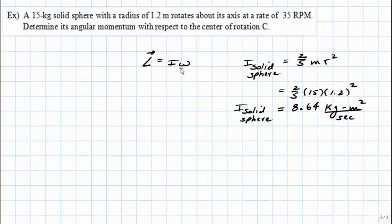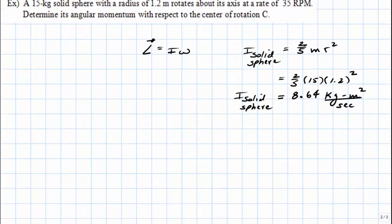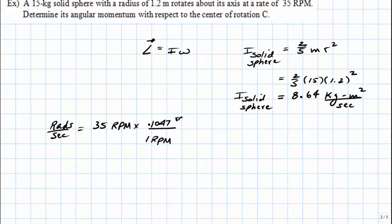Next, we have to determine the sphere's angular velocity. The angular velocity is given as 35 RPM. RPMs are not SI units, so we have to convert to radians per second. We set up a conversion: 35 RPM times 0.1047 radians per second per RPM. The RPMs cancel, and the result is 3.665 radians per second.